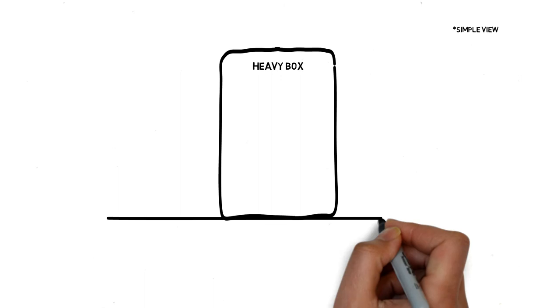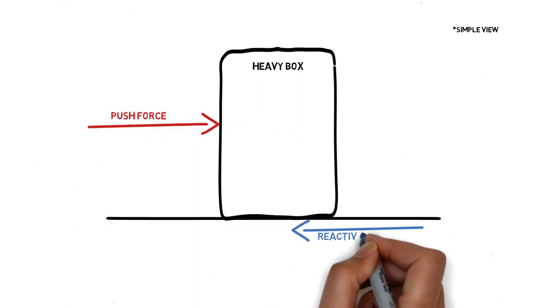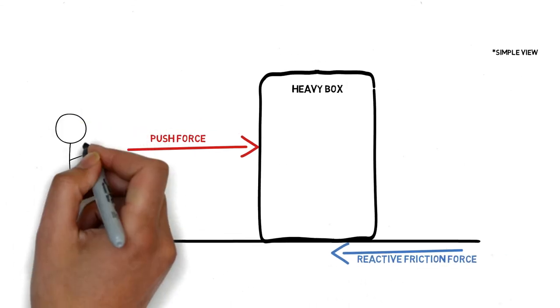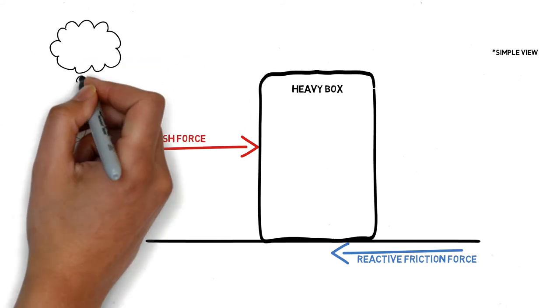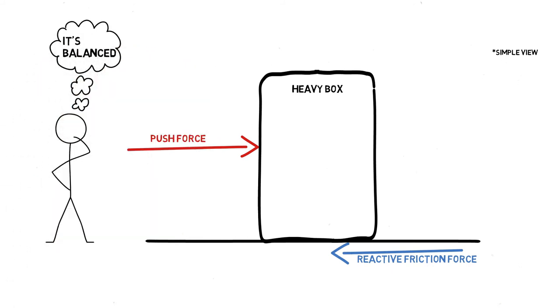These forces depend upon the properties of the object, either directly or indirectly. The reason for the heavy box to stay in the same position is because of the frictional force acting between the ground and the crate, which acts in the opposite direction. This force is a reaction force which balances the applied force and allows the box to stay in the same position.